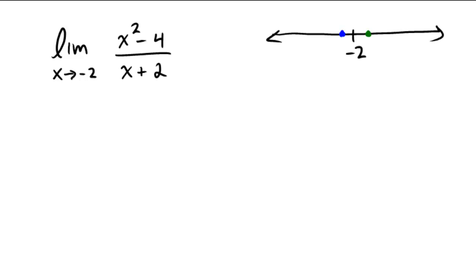Assuming you paused and tried it out, I'm going to now do it together with us. Let's go negative 2.001 as a number that's just slightly to the left of negative 2. And I'm going to stick that into this rule to see what I end up getting. Negative 2.001 squared minus 4 over negative 2.001 plus 2, and that seems to be giving me a value of negative 4.001.